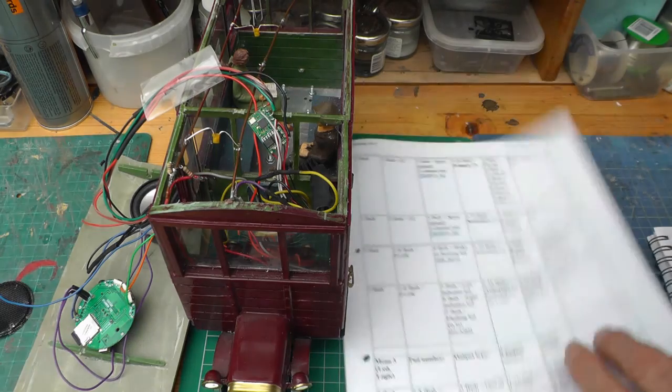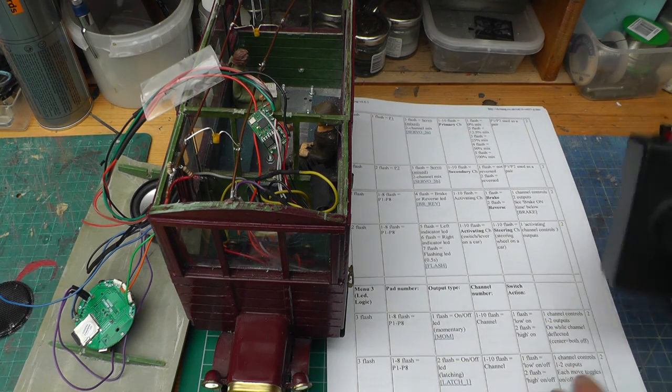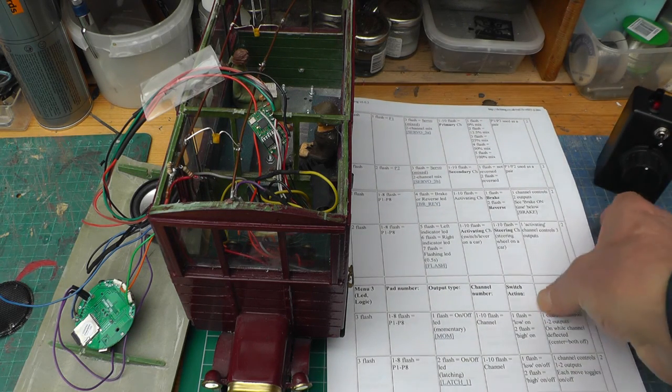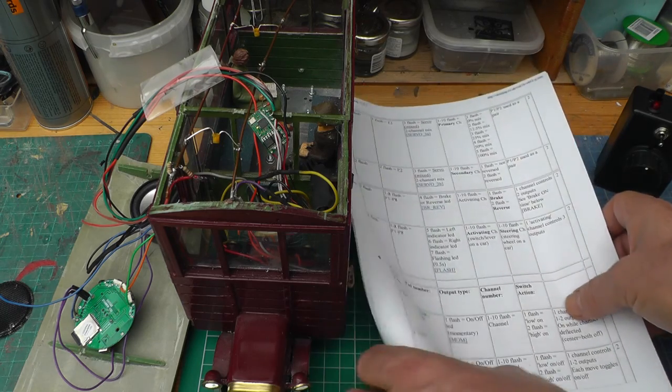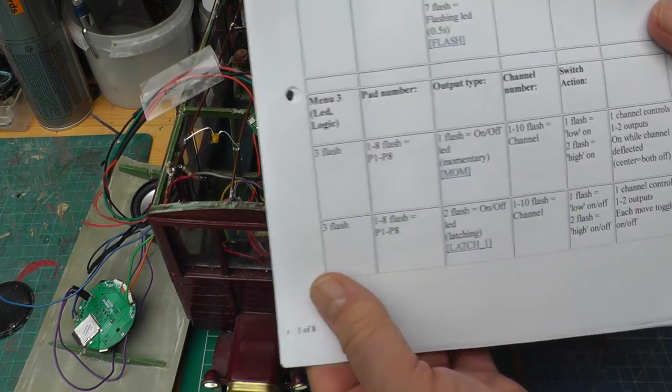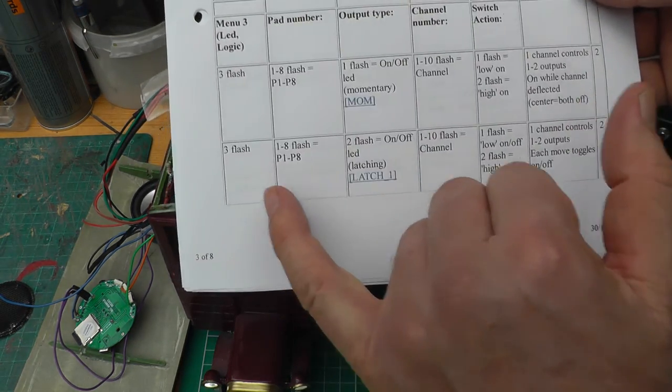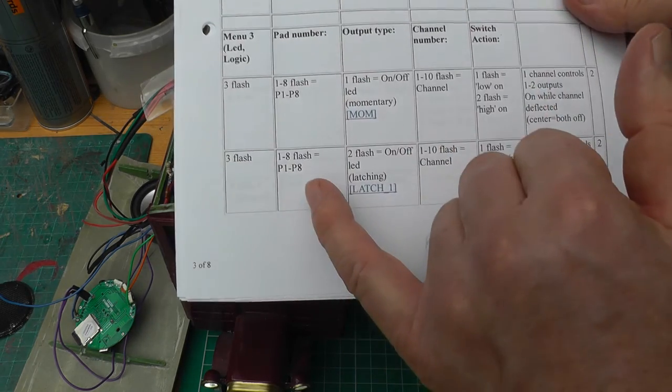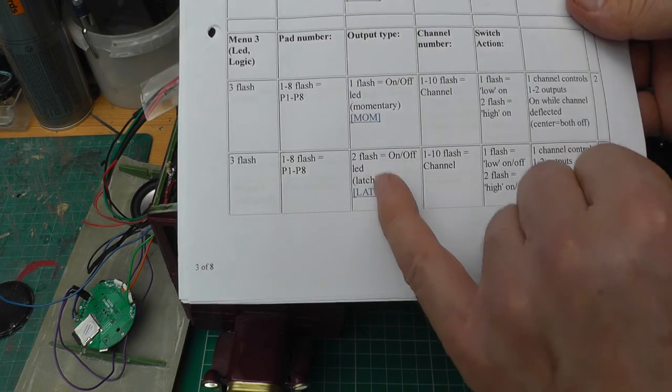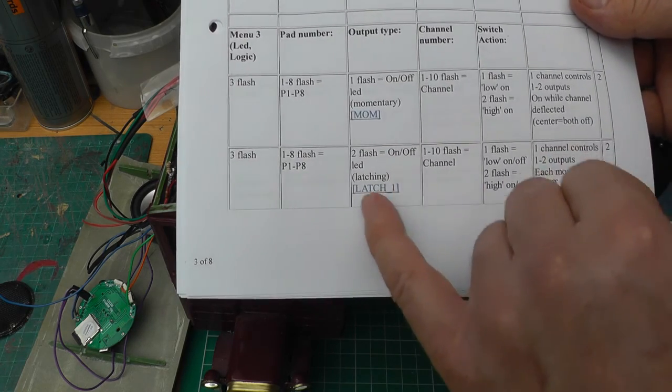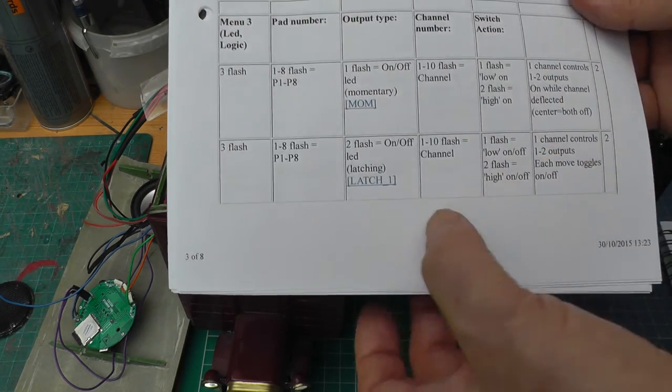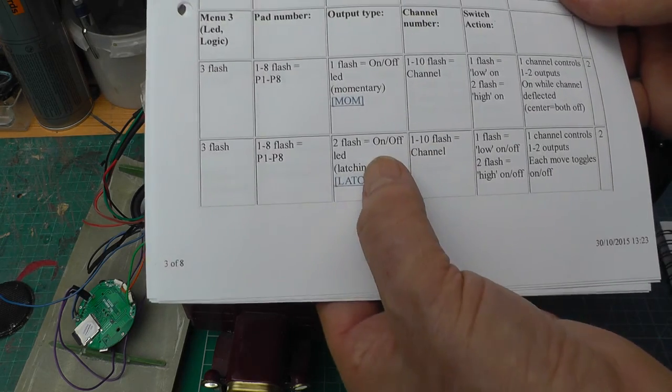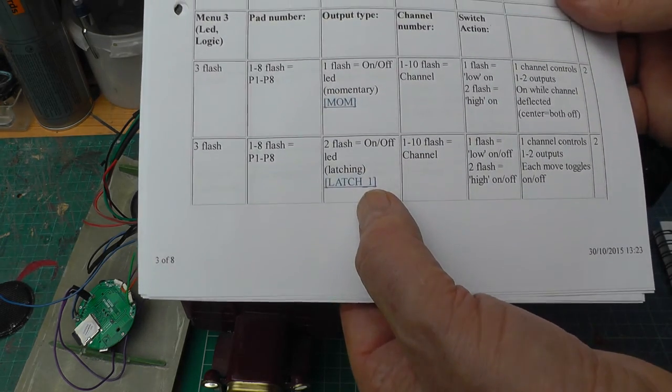The first job is to download or look on the Deltang website and get the right settings that you need on the chart. In this case it's menu 3 and I want it to be latching so that when I press the bind button the lights come on, stay on until I press the bind button again.